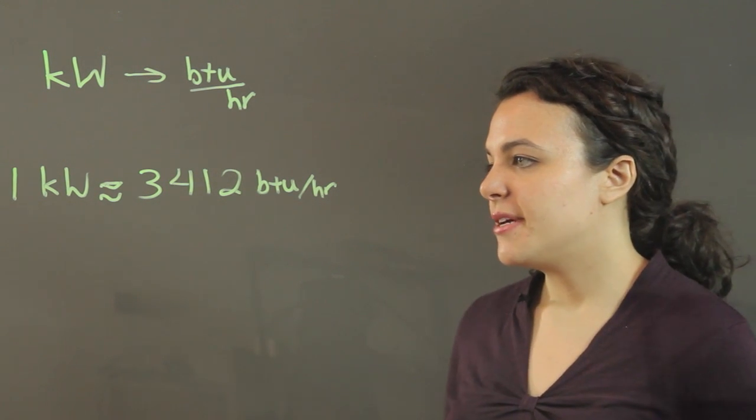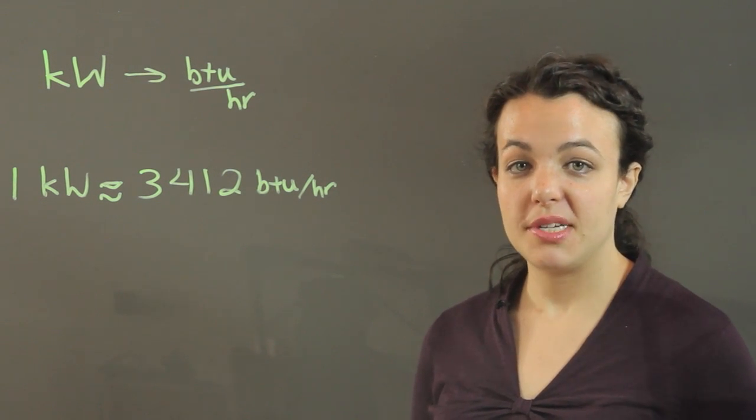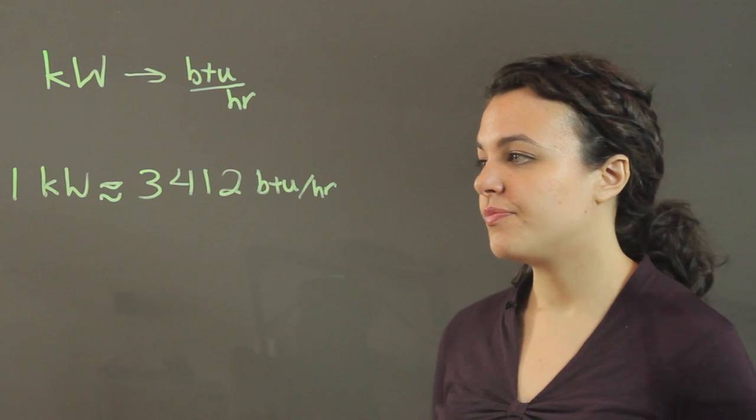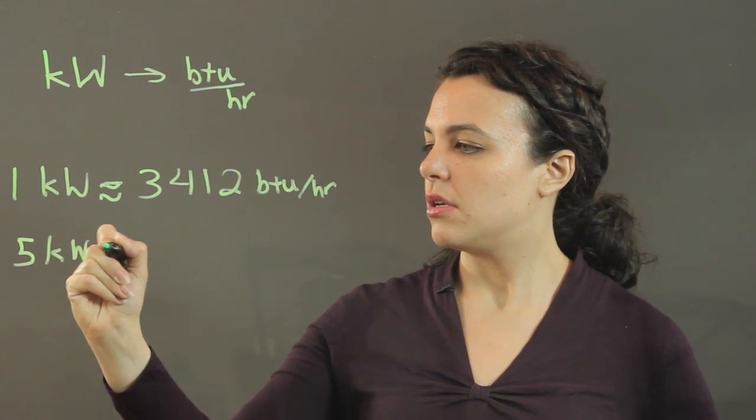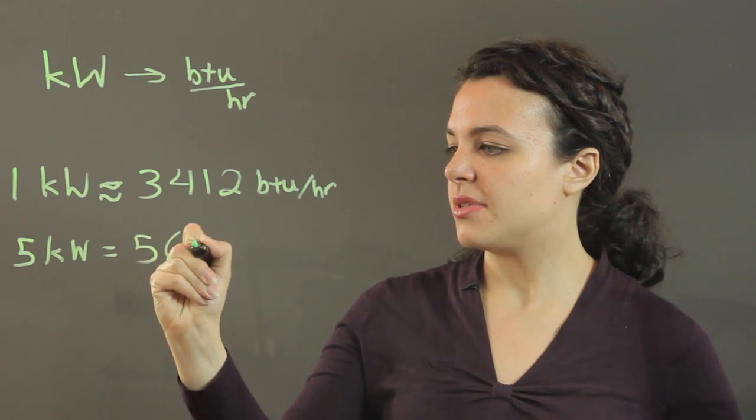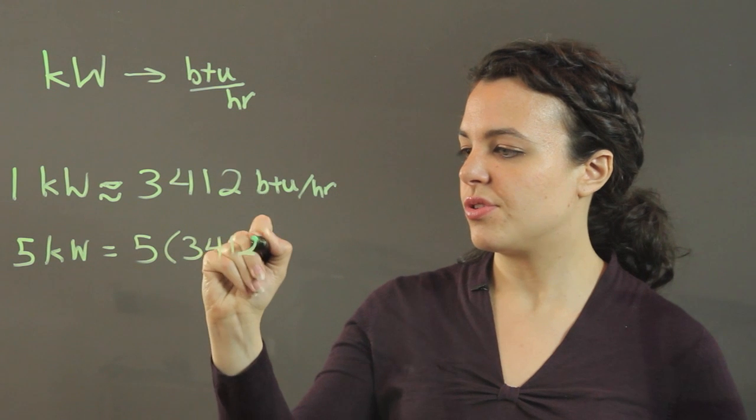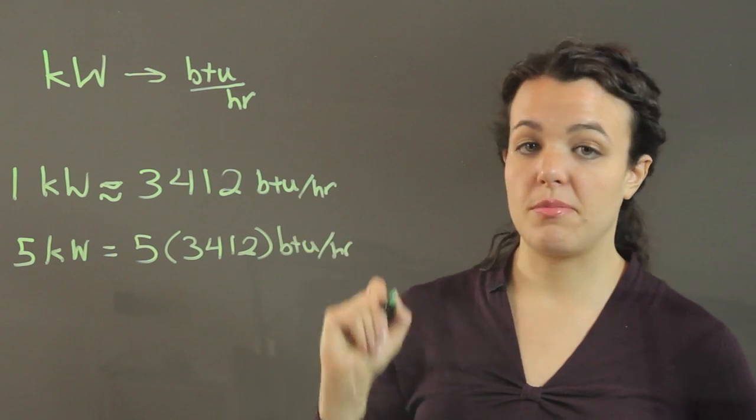So let's say we have 5 kilowatts and we want to know how many BTUs per hour that is. Well, 5 kilowatts is just equal to 5 times 3,412 BTU per hour, so we're going to multiply.